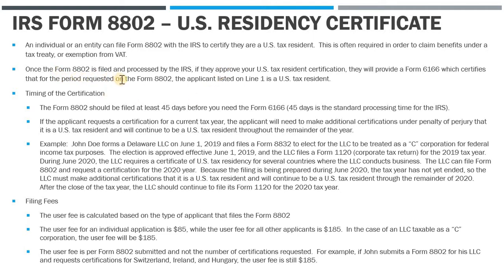Once the Form 8802 is filed and processed, the IRS sends you what's called Form 6166 — that's the certification form. It contains the name of the person or entity, their tax ID number, and the tax period being referenced. They don't issue a blanket statement; it only covers a specified period of time. Let's talk about the timing of the certification because this is important.